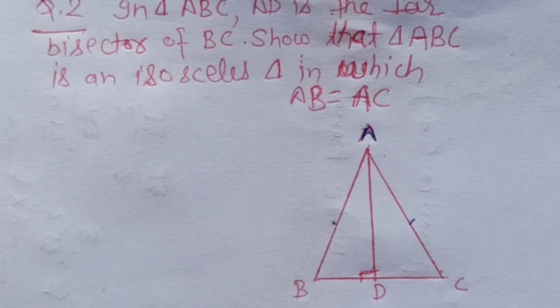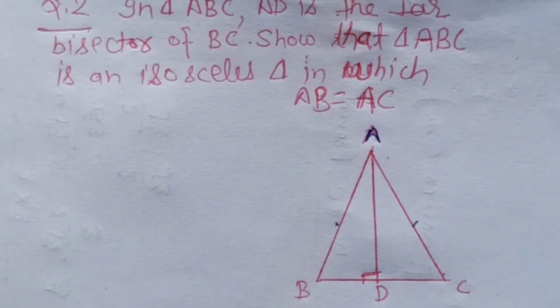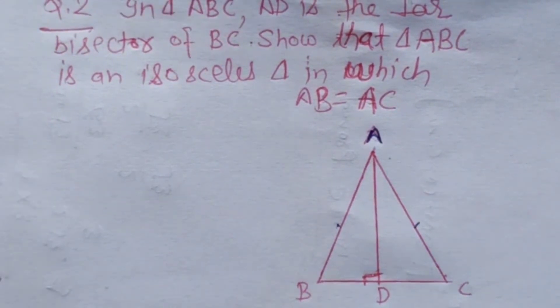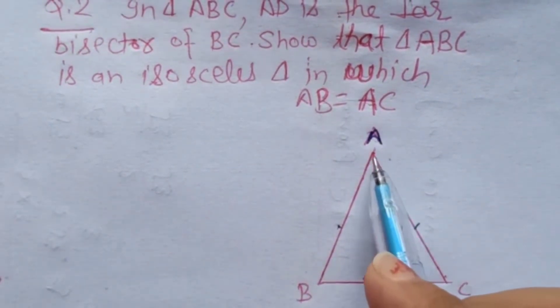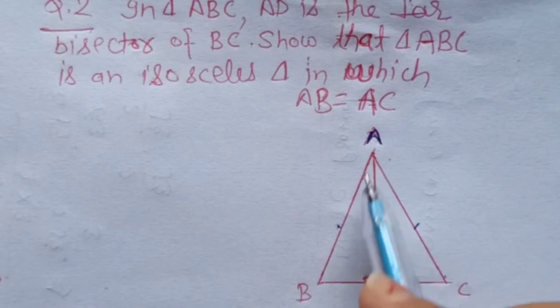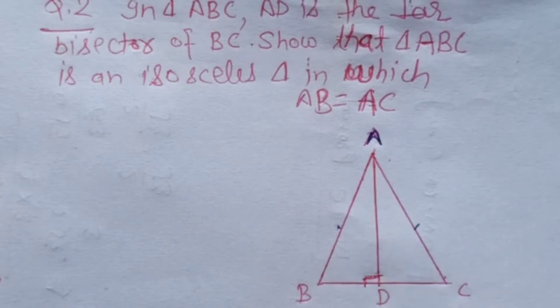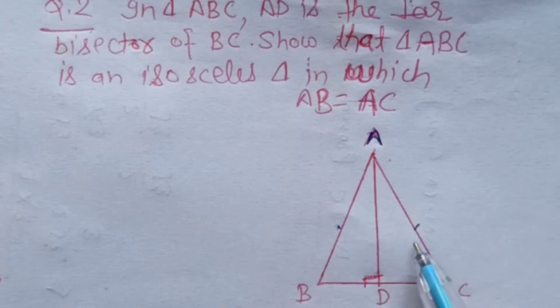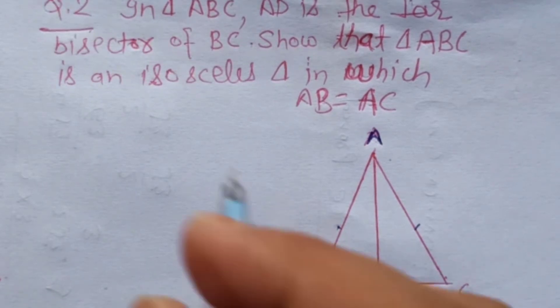Hume prove karna hai ki triangle ABC isosceles hai jisme AB aur AC equal hain. Isko prove karne ke liye hum dono triangle leke chalenge: triangle ADB aur triangle ADC. In dono ko hum congruent prove karenge, phir CPCT se ho jayega.